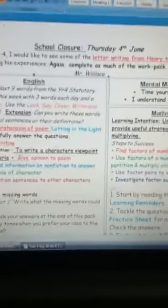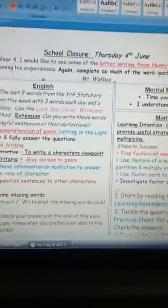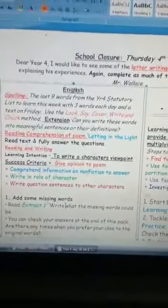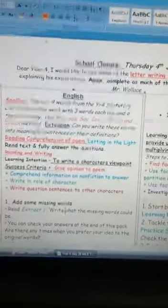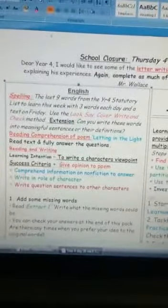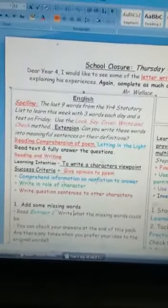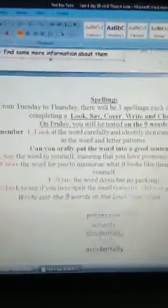Hi children, this is the English activities for Thursday the 4th of June. I hope you're okay. Today we're going to start off with spelling three more words, the three last words for your list, and they are